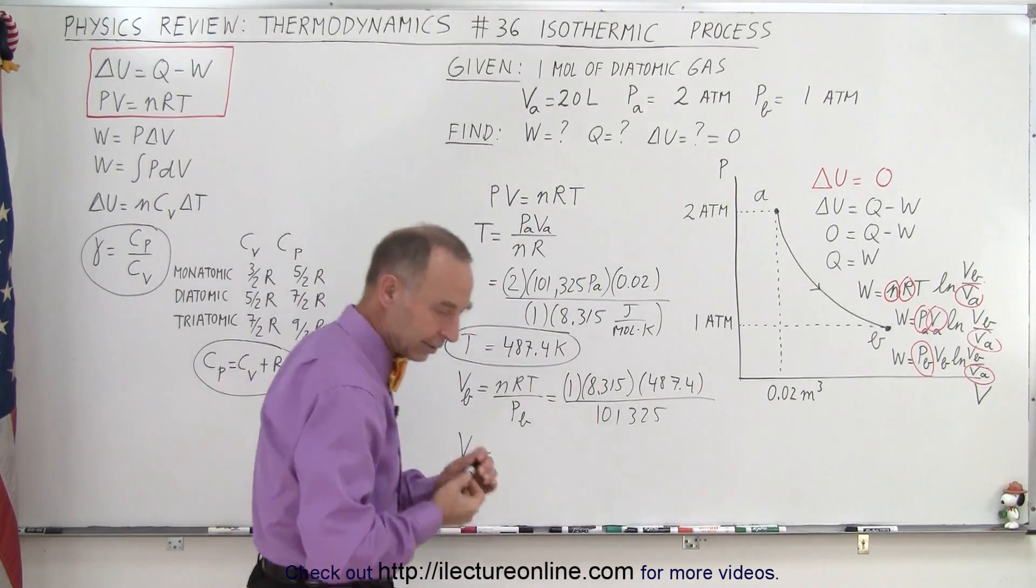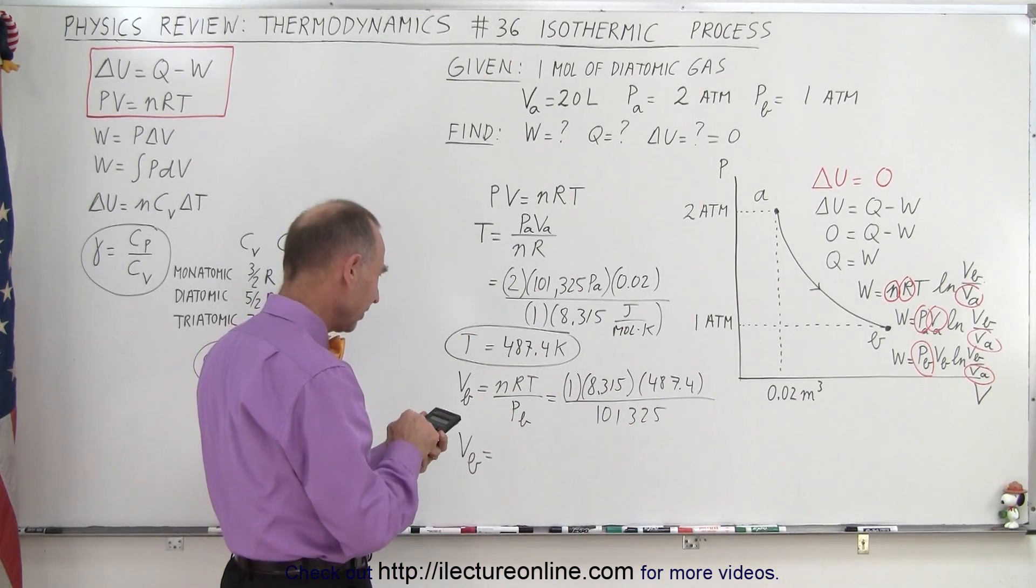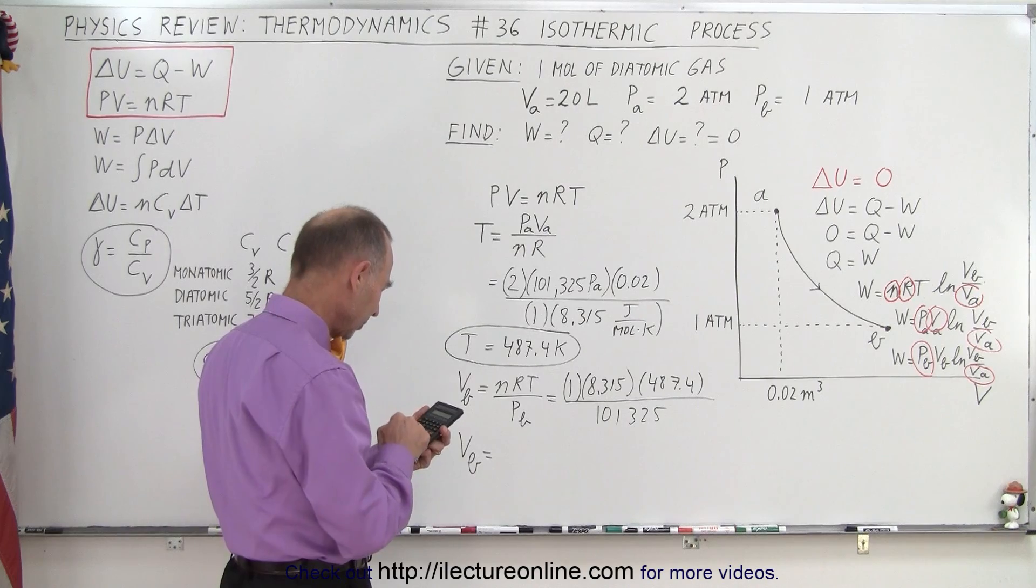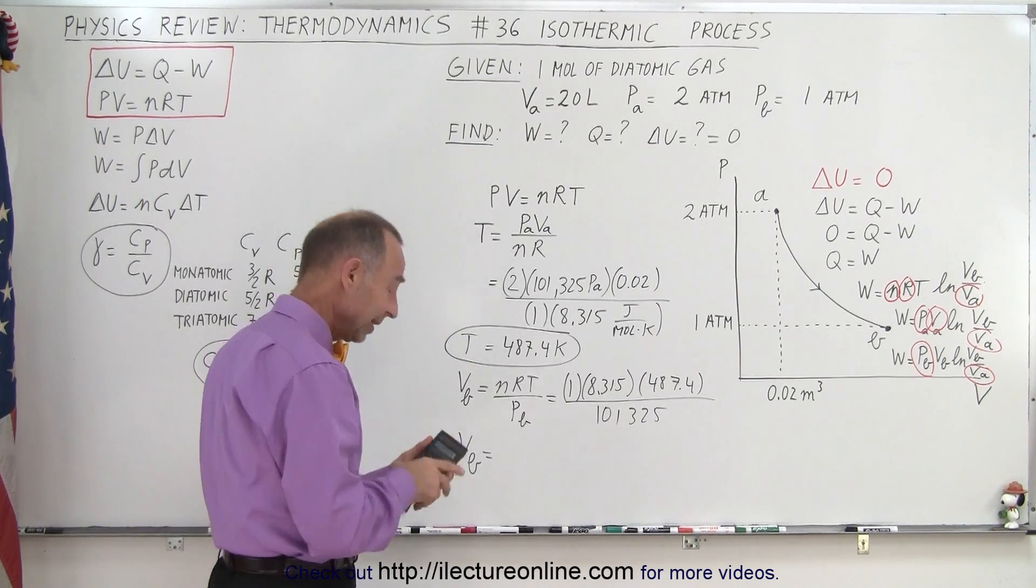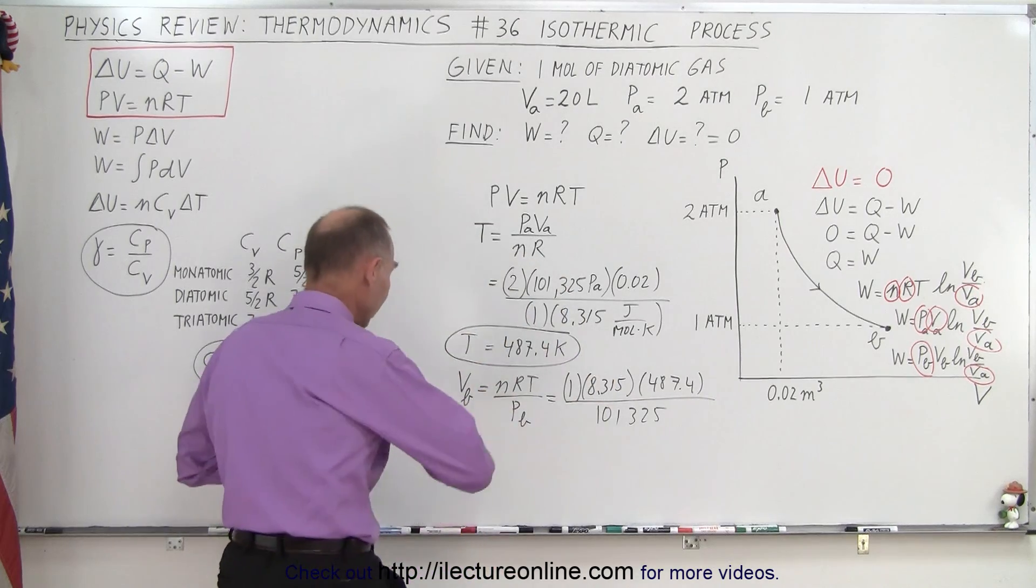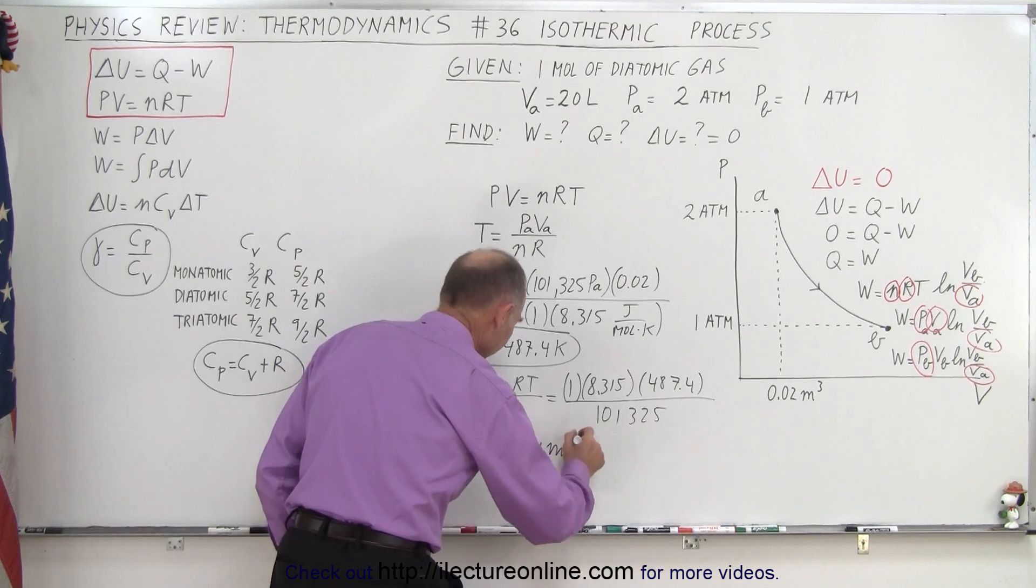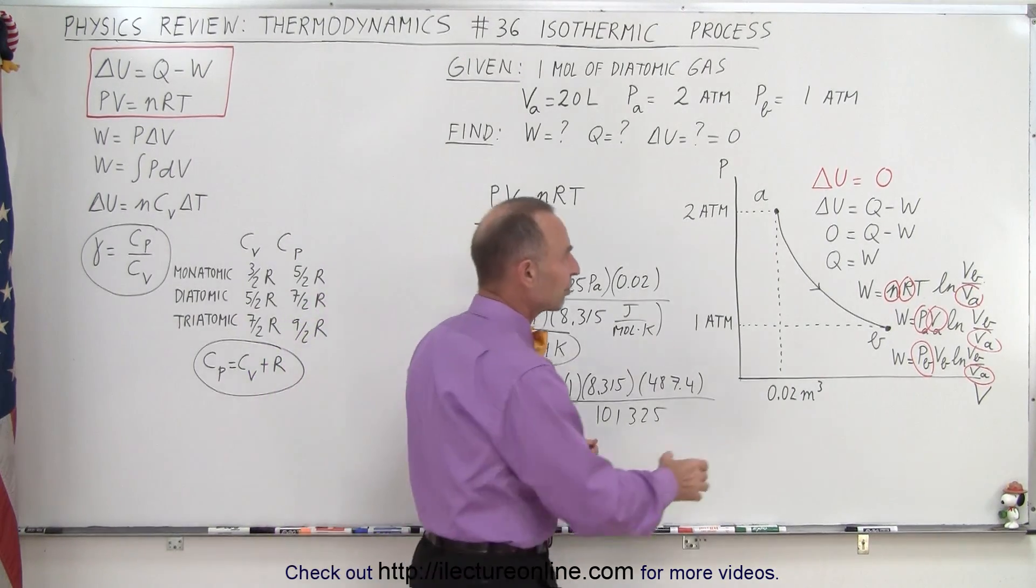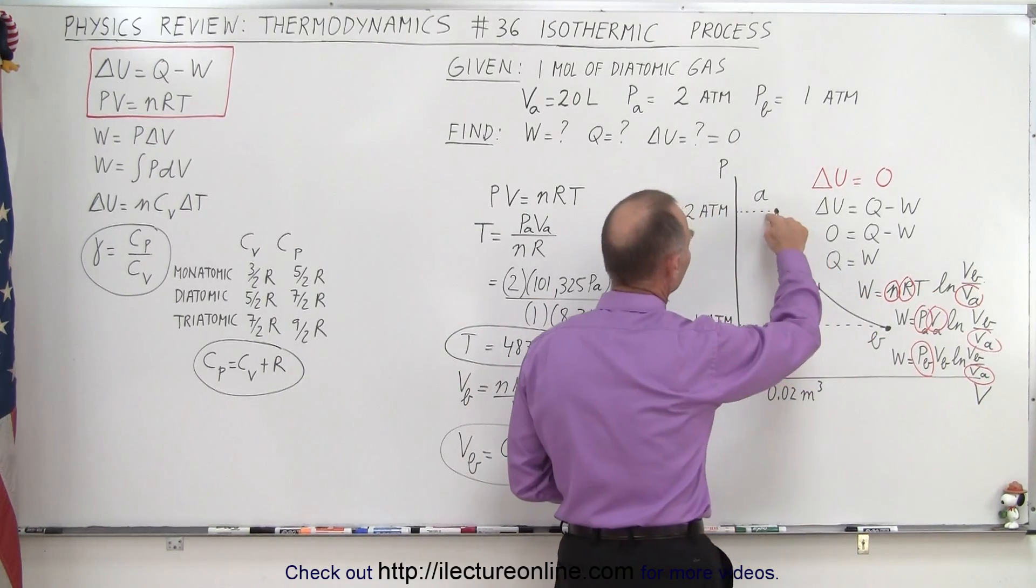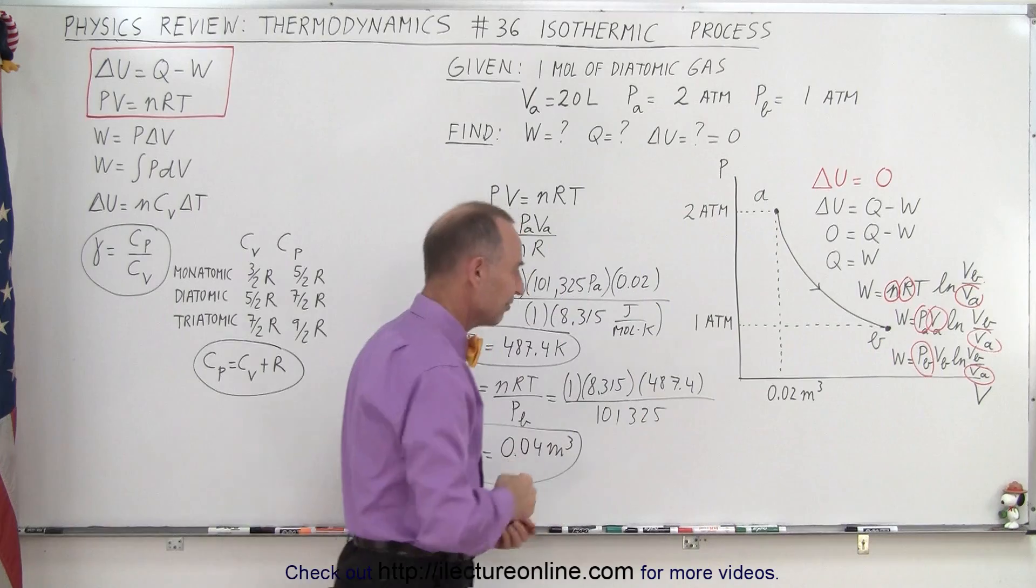So if we now get the calculator, what do we get? That's 8.315 times 487.4 divided by 101,325. And that's exactly double what it was at A, which of course we could have predicted that. Why could we have predicted that? Because we know that the temperature is constant, and so that means if the pressure goes to half, the volume must double. That's what we found.